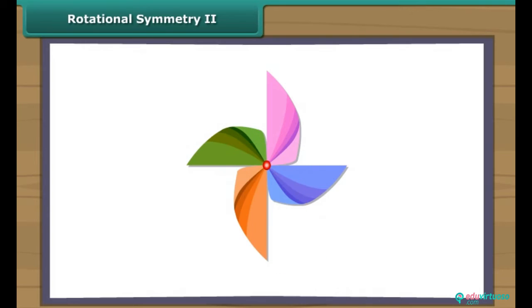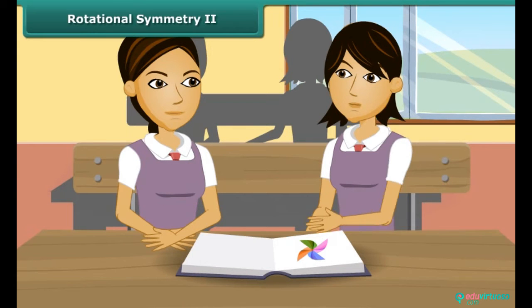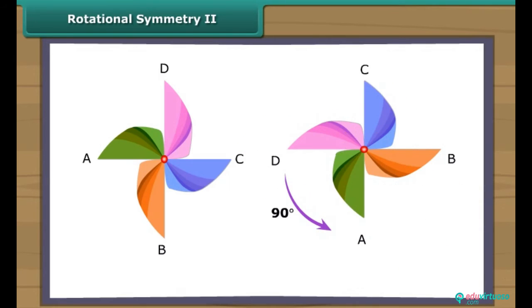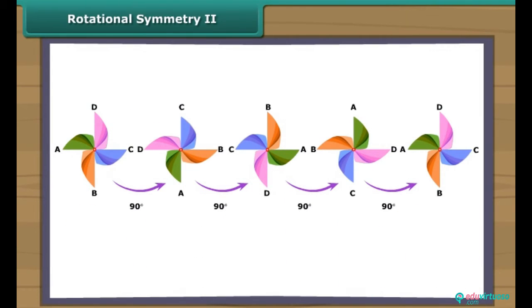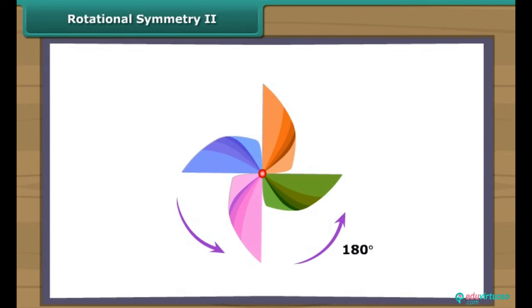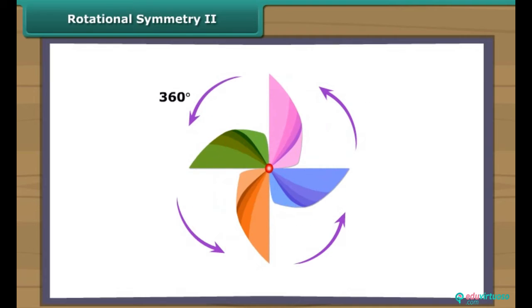This is a paper windmill. It has rotational symmetry. If you rotate it by 90 degrees about the fixed point, the windmill will look exactly the same. In a full turn, there are four positions — on rotation through the angles 90 degrees, 180 degrees, 270 degrees, and 360 degrees — when the windmill looks exactly the same. Therefore, we can say that it has a rotational symmetry of order 4.